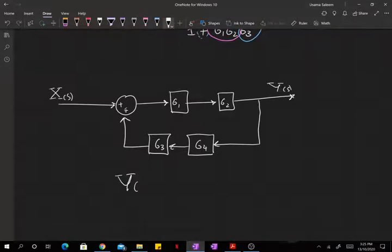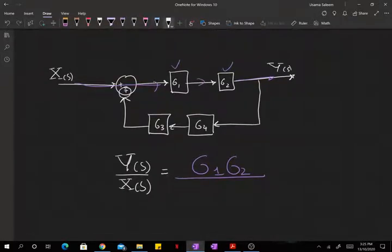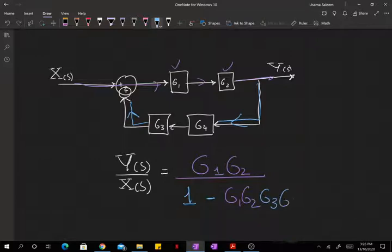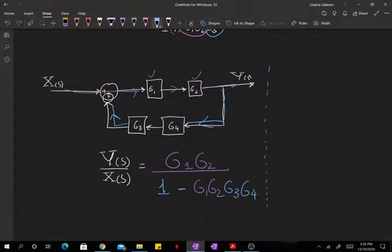Now I can already tell you that the transfer function of Y over X: let's see what's happening in the straight path. In the straight path, I'm encountering G1 and G2. So in the numerator, I'm going to have G1 times G2. Let's see what's happening. Now, since I have a plus sign here, I'm going to have a 1 minus everything that's in the straight path, which is G1 times G2, multiplied by everything that's in the feedback path, which is G3 times G4.